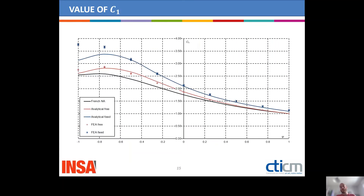We can compare the value of C1 obtained with the analytical model to finite element analysis and to the values provided by the French national annex. In the case of free warping, the analytical model always lies above the values of the French national annex. Compared to finite element analysis, the difference on the unsafe side is at most 2 to 3%, which is really admissible. Regarding fixed warping, the analytical model predicts the finite element analysis results well, except when ψ is lower than 0.5, for which the analytical model becomes very conservative.